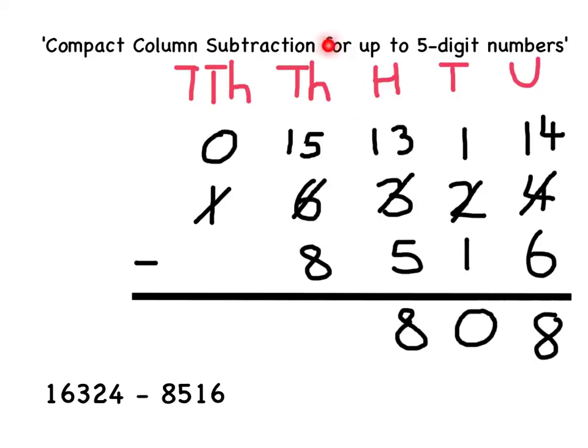Now in the thousands column I have got 15,000 subtract 8,000. This gives me 7,000. There is now nothing at all in the 10,000 column, so I can now ignore this column. This then gives me my answer. So the answer to the question is 7,808.